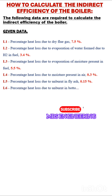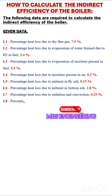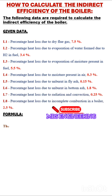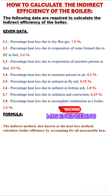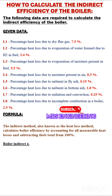The calculation formula for the indirect efficiency of the boiler: the indirect method, also known as the heat loss method, calculates boiler efficiency by accounting for all measurable heat losses and subtracting their total from 100%.